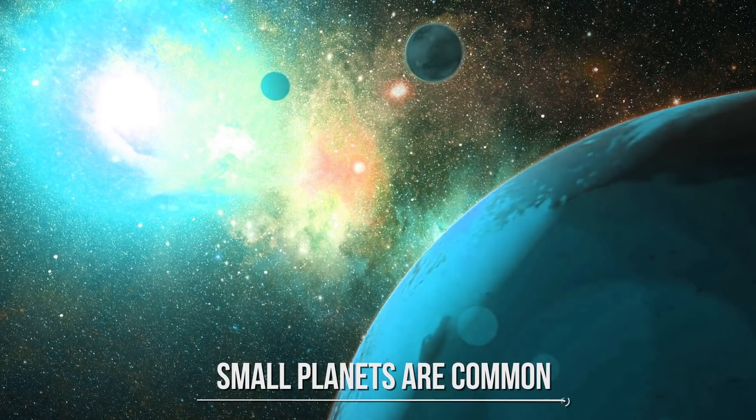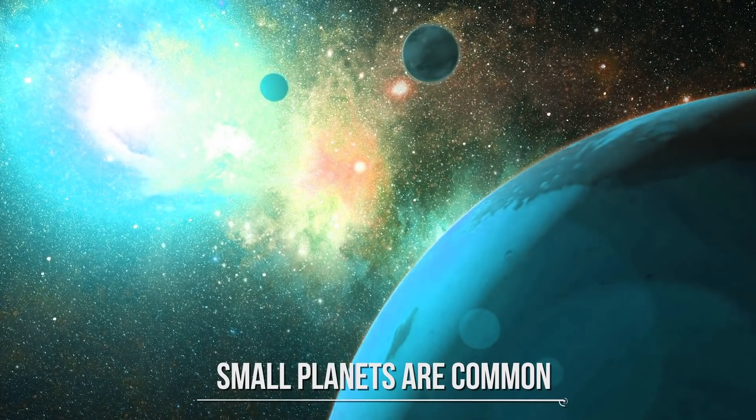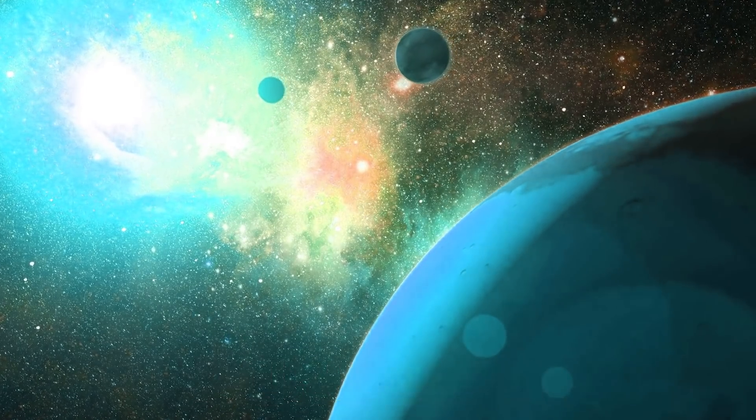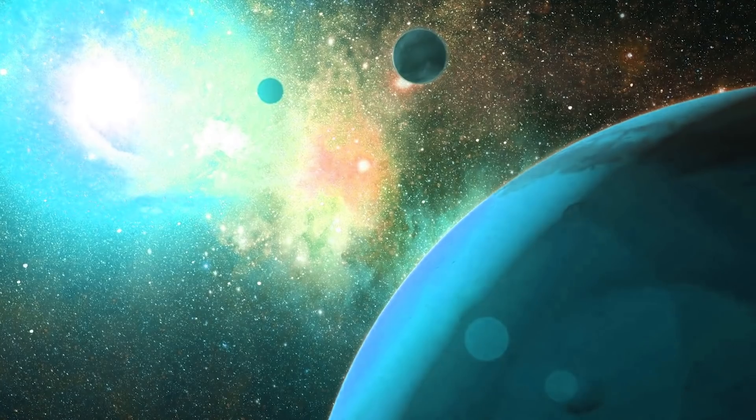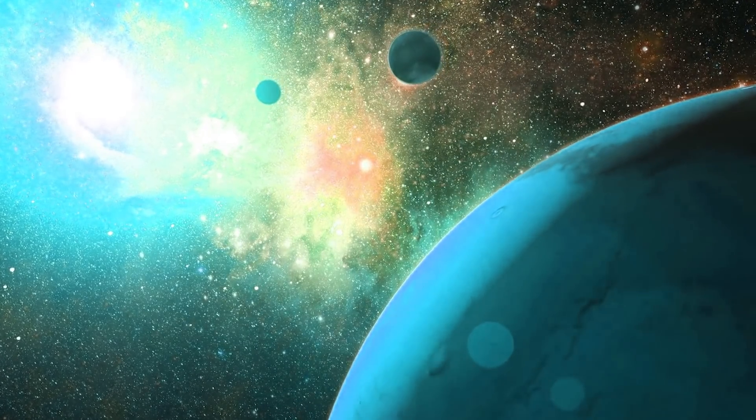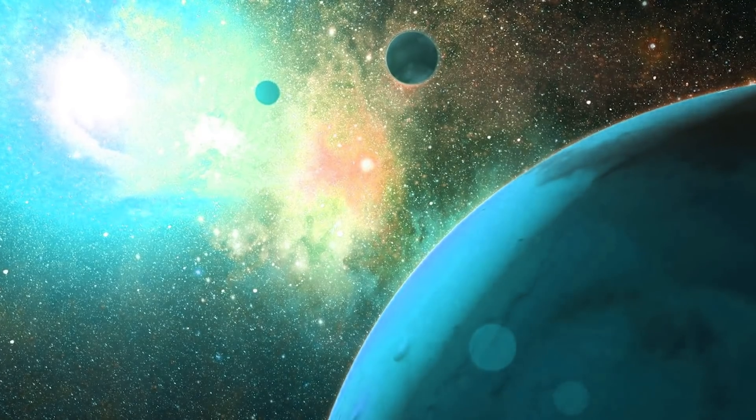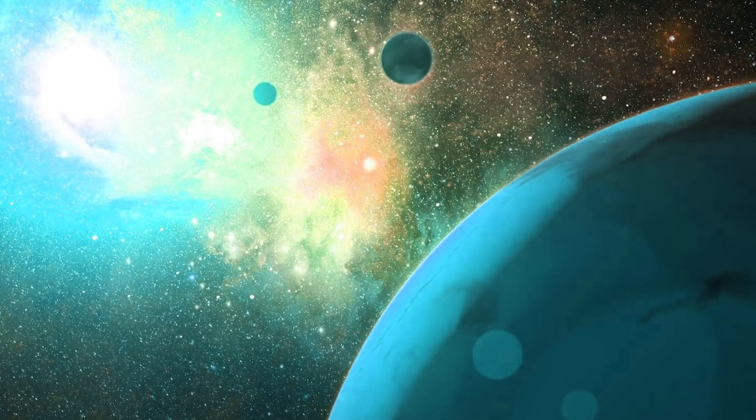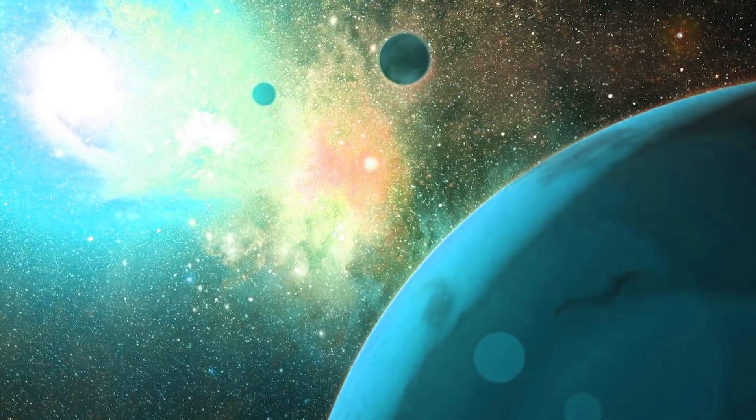Small planets are common. Kepler has shown us our galaxy is teeming with terrestrial-sized worlds. The most recent analysis of Kepler's discoveries concludes that 20 to 50% of the stars in the sky are likely to have small, possibly rocky planets similar in size to Earth, within the habitable zone of their parent stars, where water could pool on the planet's surface. We still have much to learn about whether any of them could host life.